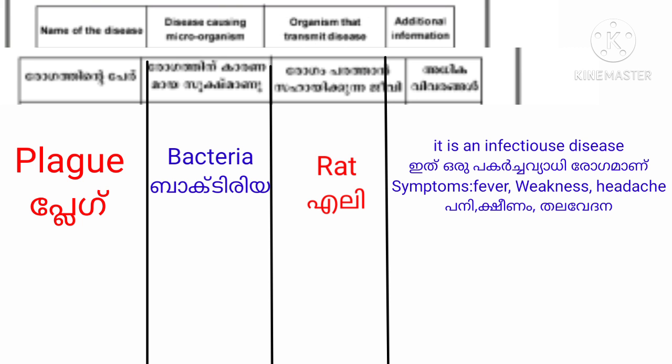Next, the disease-causing microorganism is Bacteria. The organism that transmits the disease is Rat. Additional information: it is an infectious disease. Symptoms include Fever and Weakness and Headache.